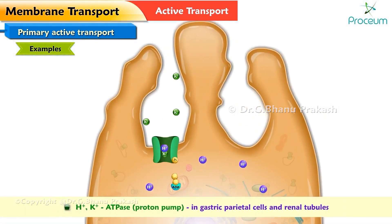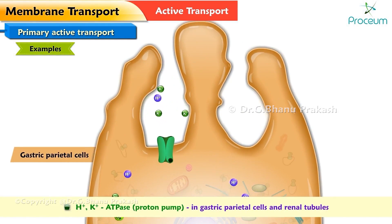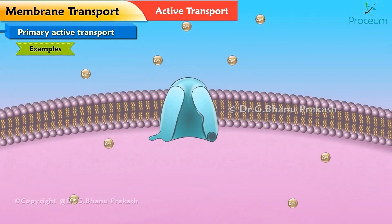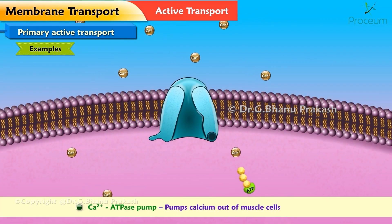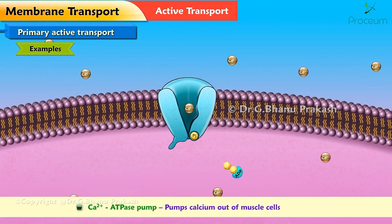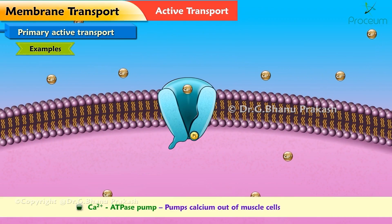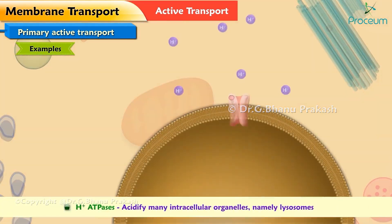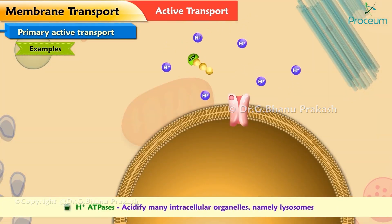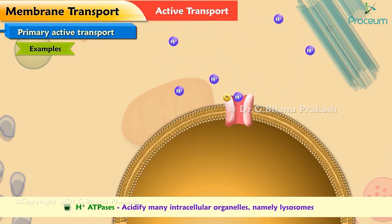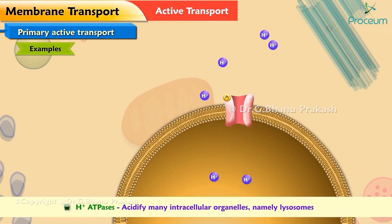The H+/K+ ATPase proton pump is present in gastric parietal cells and renal tubules. The calcium ATPase pump pumps calcium out of muscle cells, and H+ ATPases acidify many intracellular organelles, namely lysosomes.